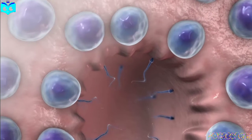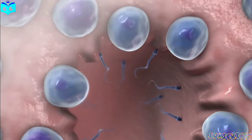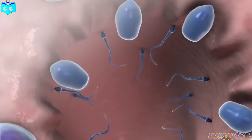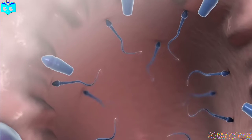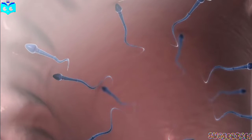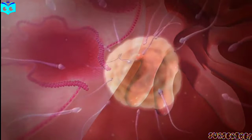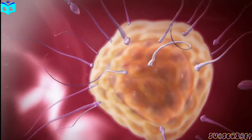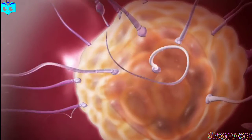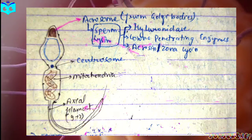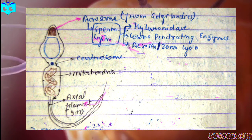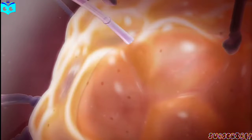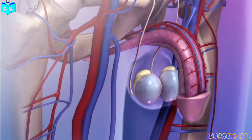Finally, spermiogenesis. This phase involves the transformation of round spermatids into elongated, tail-bearing sperm cells. This intricate process ensures that each sperm cell is equipped with the necessary components for its journey. From the head containing the genetic material to the tail for motility, each part plays a crucial role in the journey towards fertilization.